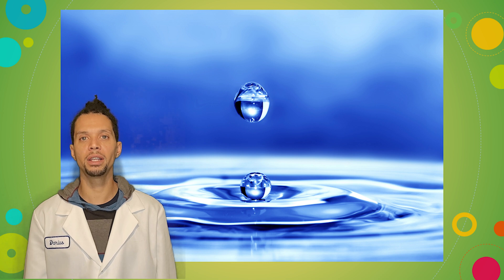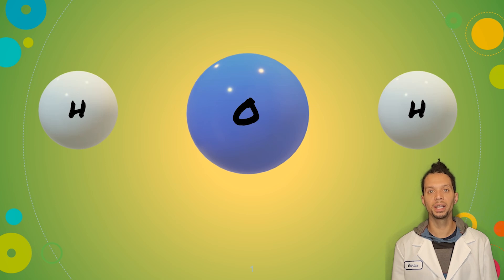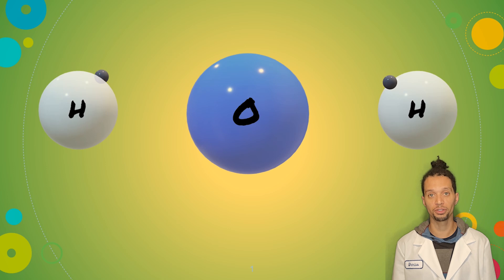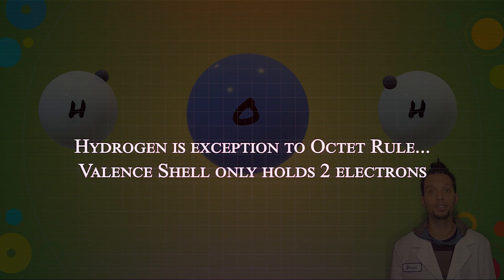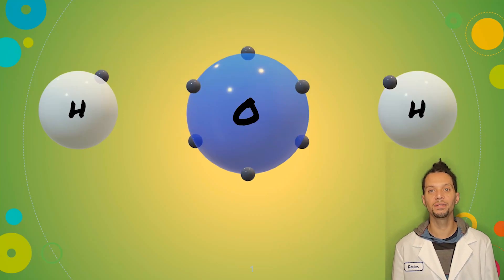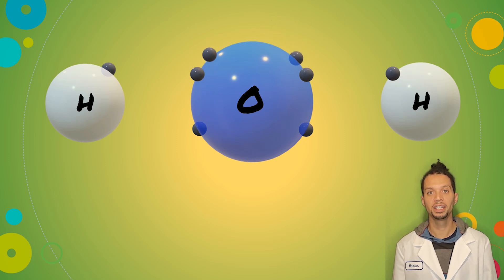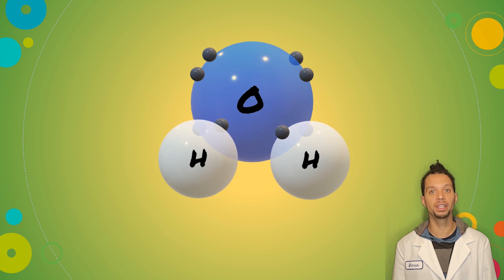To better understand how elements share electrons to form compounds, let's take a closer look at the most widespread covalent compound on Earth: water. Water is a chemical combination of two hydrogen atoms and one oxygen atom. Each hydrogen atom contains one valence electron and a valence shell that can fit two electrons, so hydrogen is out there trying to find another electron to fill its valence shell. The one oxygen atom in a molecule of water contains six valence electrons, so in order to satisfy the octet rule, the oxygen atom needs two more electrons in its valence shell. To achieve the octet rule, both hydrogen atoms will share their single electrons with the oxygen atom.